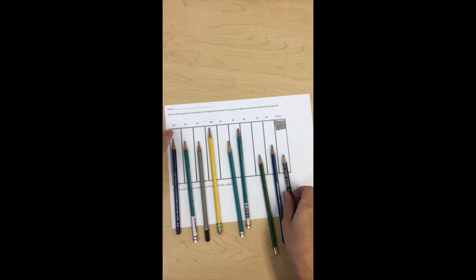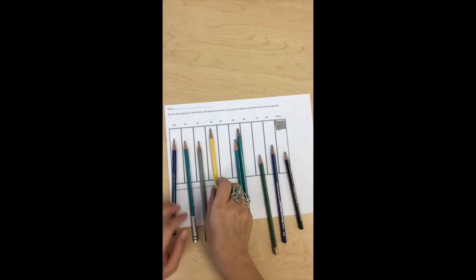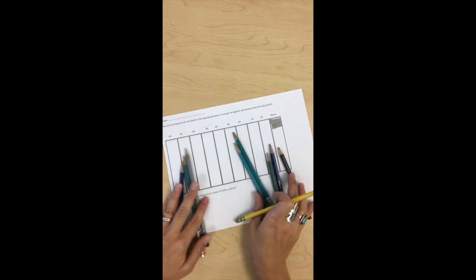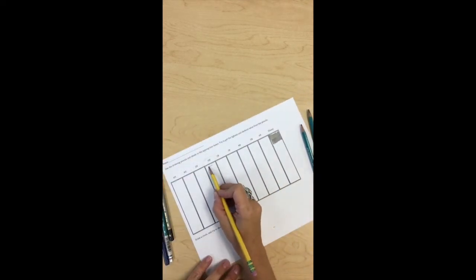On the H pencils, 6H is your lightest, ebony is your darkest. I'm going to use my HB here. I'm going to slide these other ones out of the way. What you want to do is start to try and see what kind of range these pencils give you.